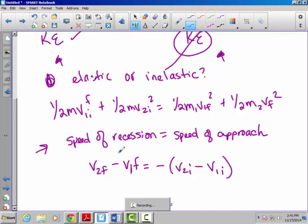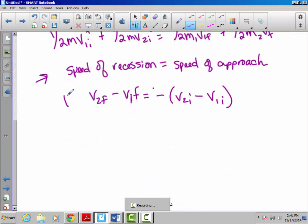So the difference between the final velocities equals the negative of the difference between the initial velocities. This is a pretty handy-dandy expression to have either programmed into your calculator or just memorized for test day, because it can save you a lot of headache if you understand this relationship with elastic collisions. So, just to do an example with you.